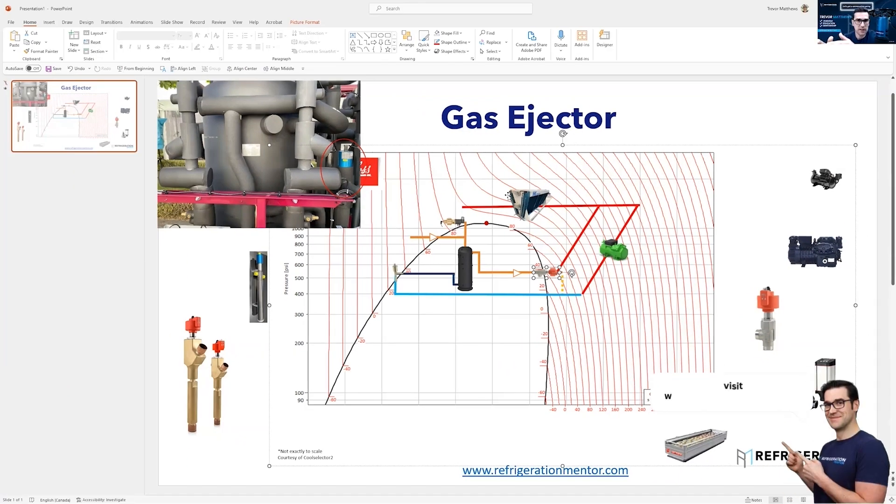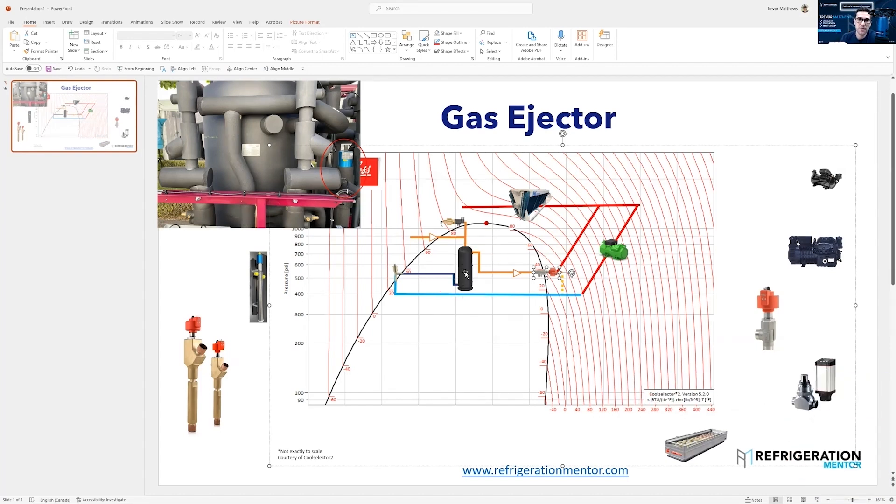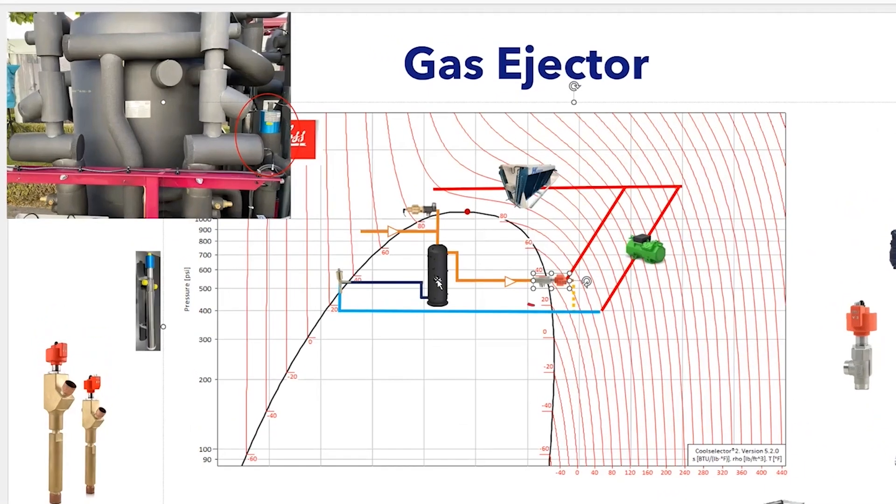In the middle of summer, when it's really warm out, you got way more flash gas than liquid. Inside the flash tank receiver, you're getting a higher percentage of vapor than liquid. That means this valve is doing a lot more work. These medium temp compressors are doing way more work.